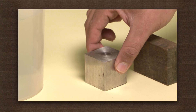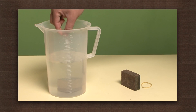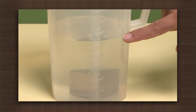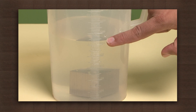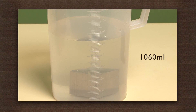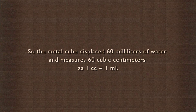Take the metal cube and put it in water. The water level rises. Note the level — it reads 1060 milliliters. So, the metal cube displaces 60 milliliters of water and measures 60 cubic centimeters, as 1 cc is equal to 1 ml.